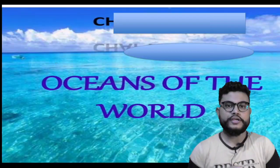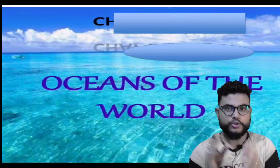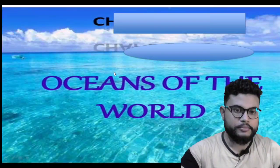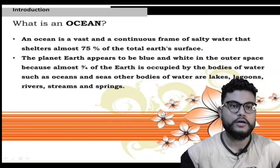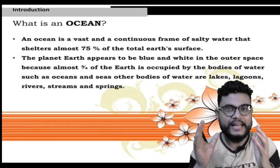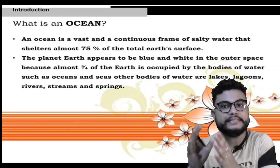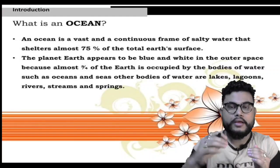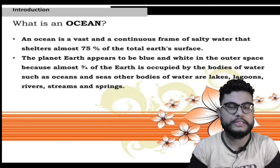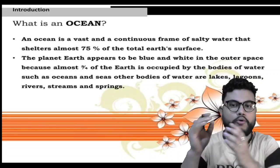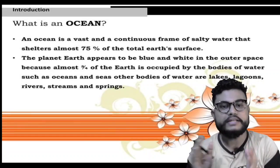Hello and welcome dear students. Here I have come up with another chapter of geography and the topic is oceans of the world. Oceans are large water bodies — they mostly contain 75% of the total earth surface. From outer space, our Earth appears blue, and the most important reason for this blue color is that three-fourths of the Earth is occupied by water bodies.